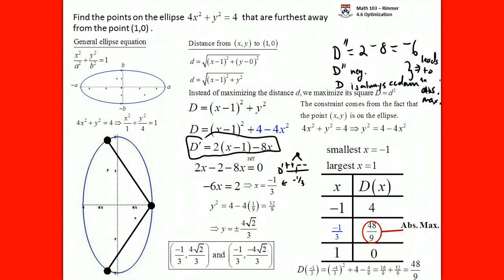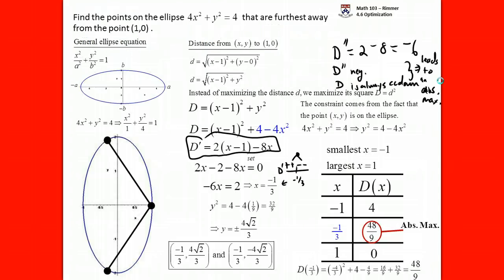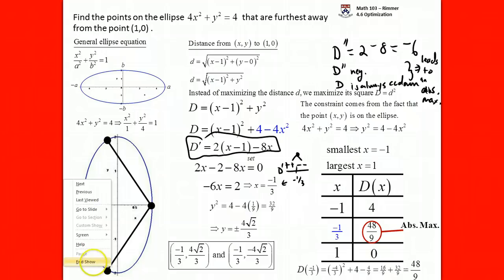We've officially answered the question. The points on the ellipse furthest from (1, 0) are (−1/3, 4√2/3) and (−1/3, −4√2/3), at a maximum distance of 4√3/3.